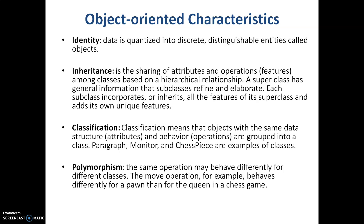Inheritance is the sharing of attributes and operations based on a hierarchical relationship from parent to child, wherein the parent in programming terms is called the superclass and the child which inherits is called the child class. The main advantage of inheritance is reusability of code — you need not repeat the code again and again. Whatever features are available with the parent need not be redefined in the child class; the child class further elaborates its own features.